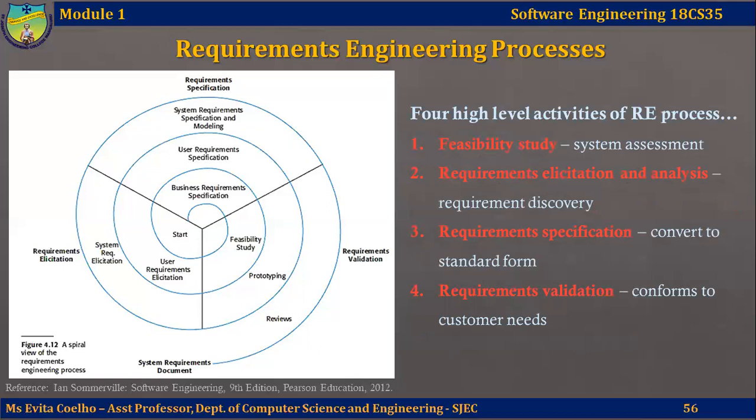In this lecture video, you have understood a high-level working of the requirements engineering process. We have seen the spiral view of the process and the four major activities: feasibility study, where you understand if the proposed system is feasible to implement; requirements elicitation, where you gather requirements; requirements specification, where you convert the gathered requirements into a standard form; and requirements validation, where you check if your specified requirements confirm to the system being developed. The end product of the requirements engineering process is the System Requirement Specification document, also called the SRS.